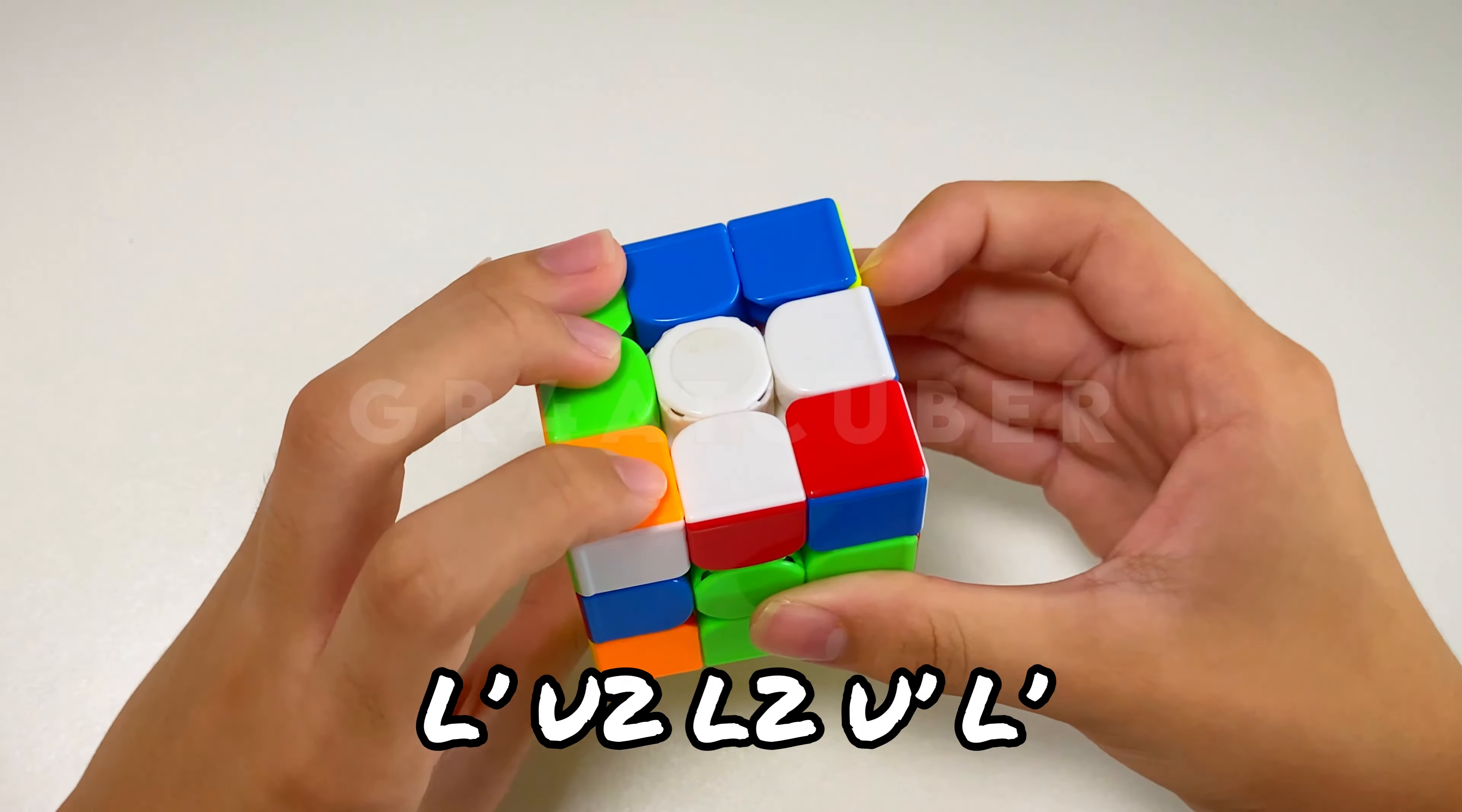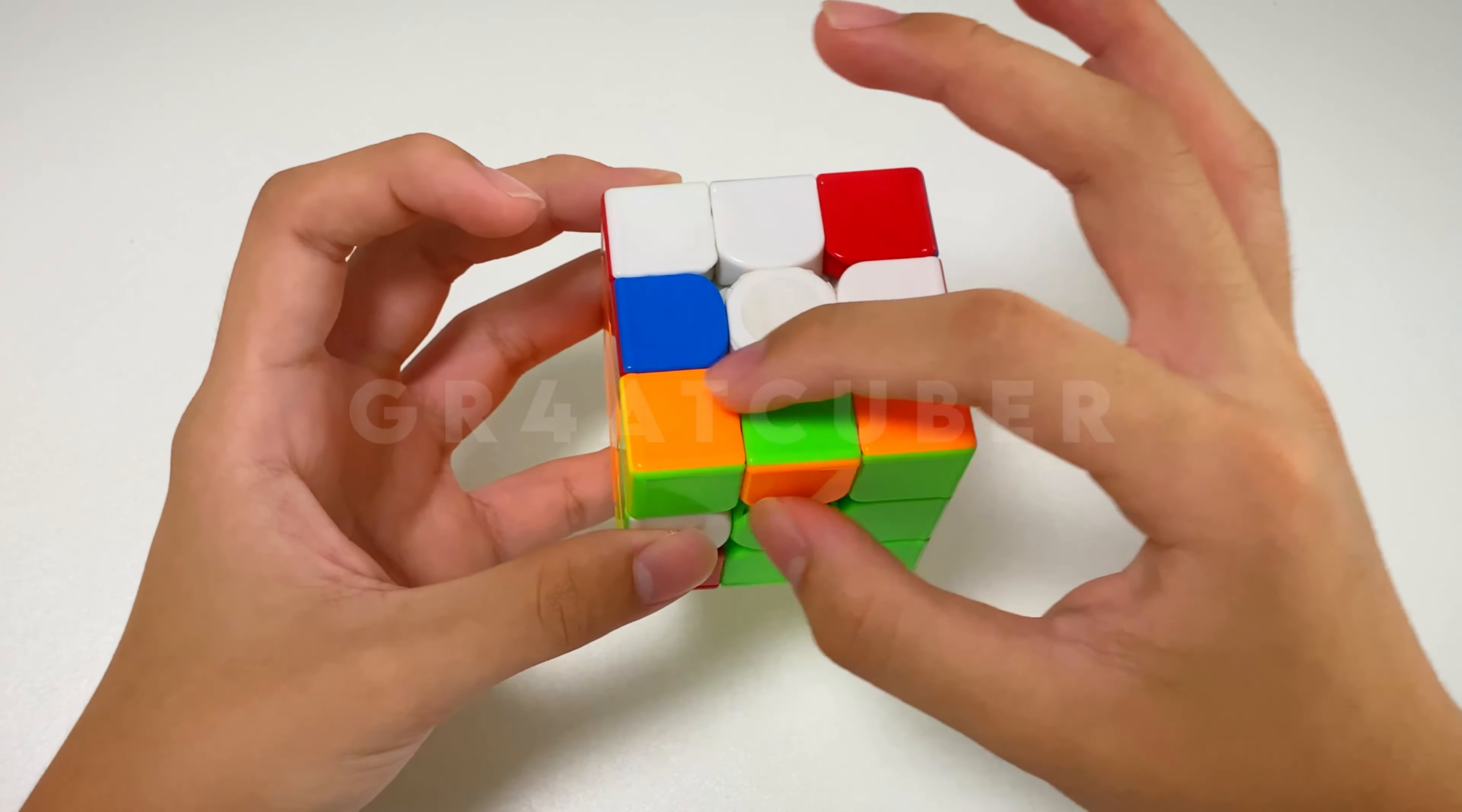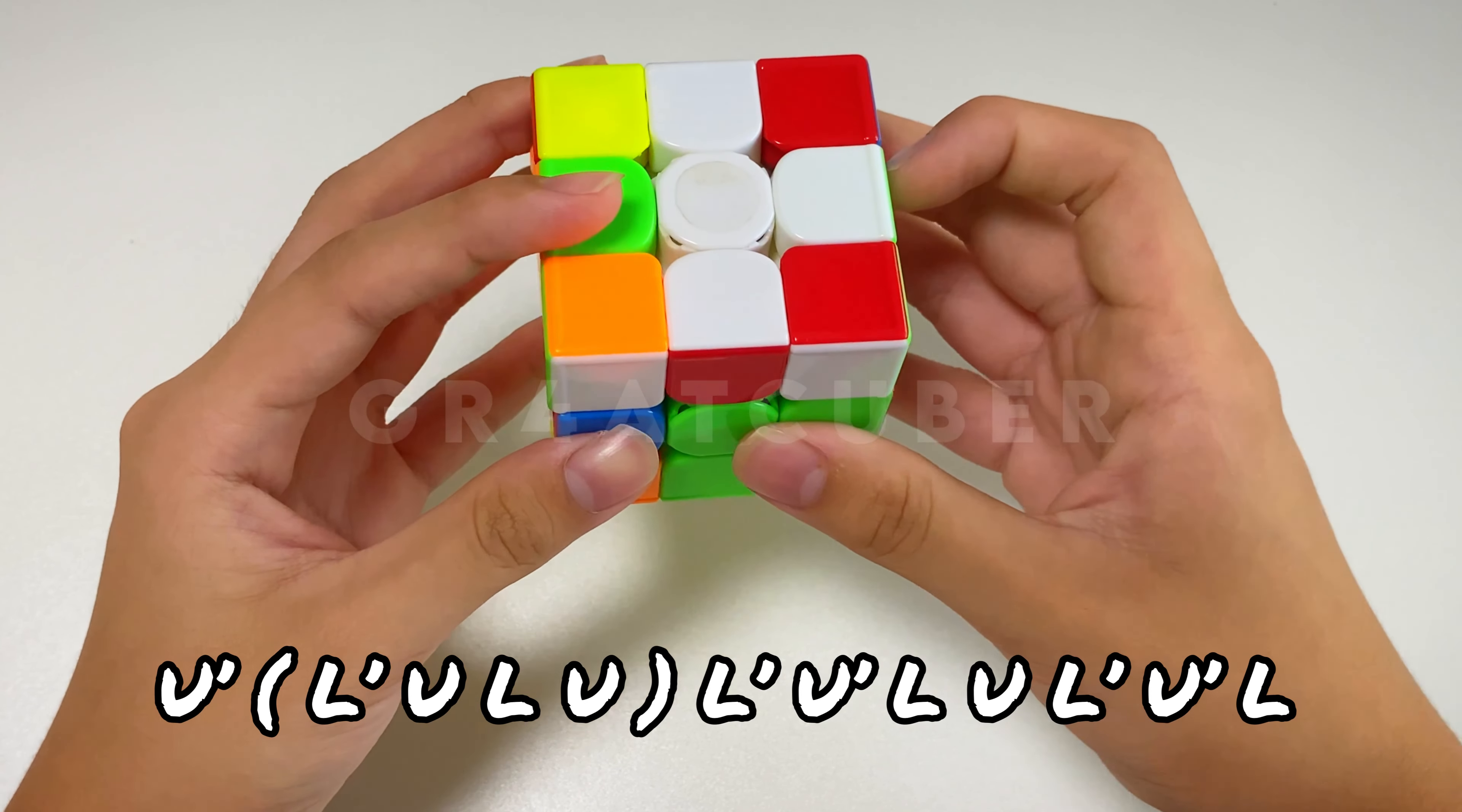So there's two pairs off. Next is this case. For this case what I do is insert it in, then I do a left sexy move to solve it.